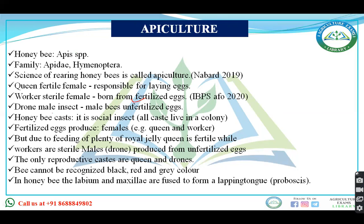Drone refers to the male insects. Drones are born from unfertilized eggs. Fertilized eggs give rise to females — that may be either queen or worker. By feeding on royal jelly one becomes a queen, and by feeding on bread-like substances another becomes a worker.